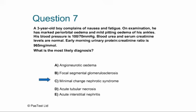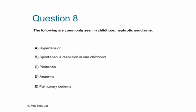Question 8 — true or false: the following are commonly seen in childhood nephrotic syndrome. A) hypertension — false, blood pressure is usually normal or low. B) spontaneous resolution in late childhood — true. C) peritonitis — false, it's a complication but not commonly seen. D) anaemia — false, not usually a feature. E) pulmonary oedema — false, rare and usually related to rapid albumin administration. Of the five, only B — spontaneous resolution in late childhood — is true.